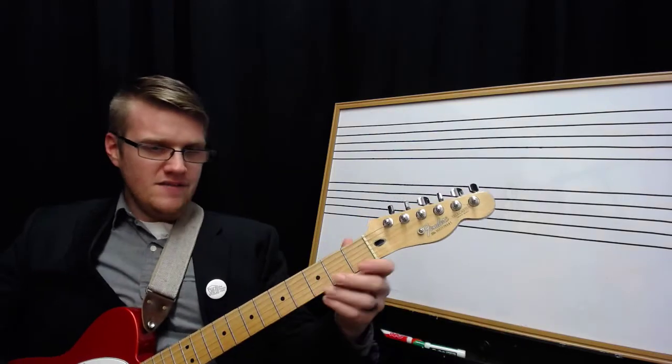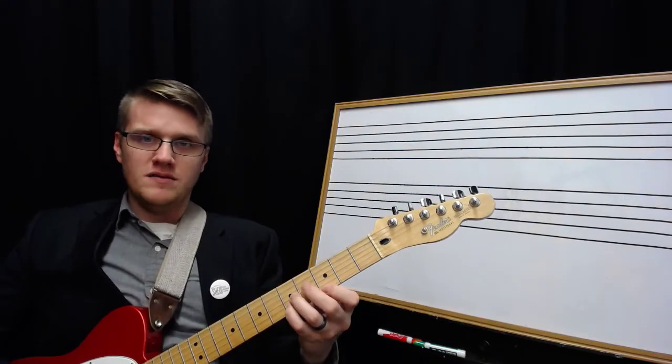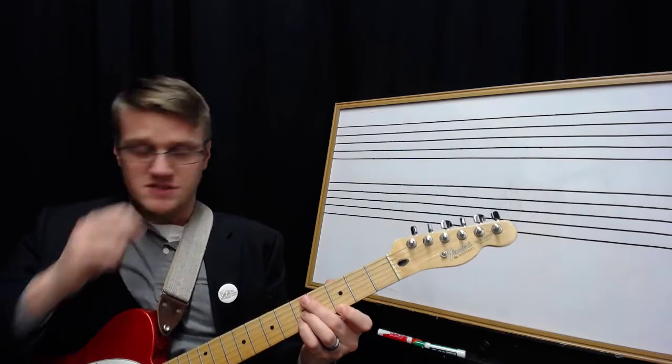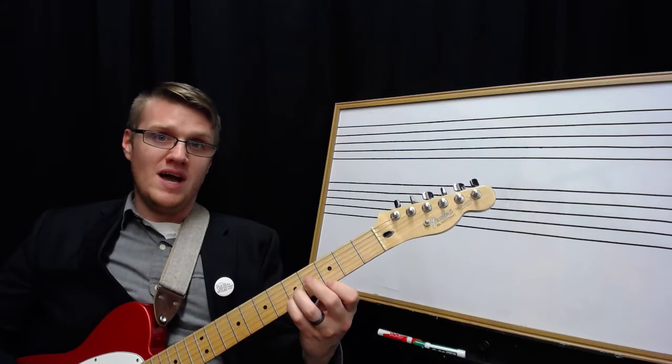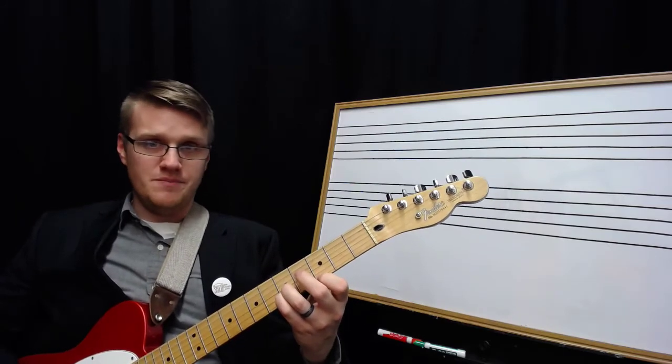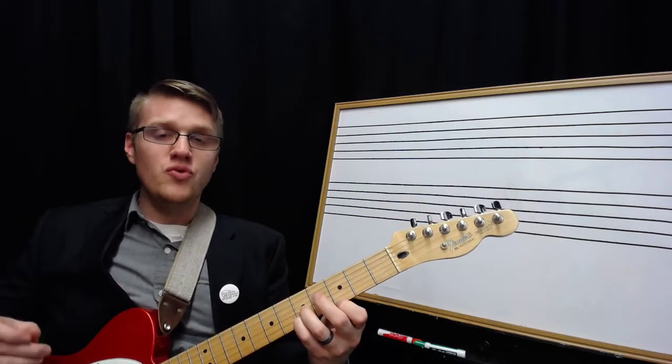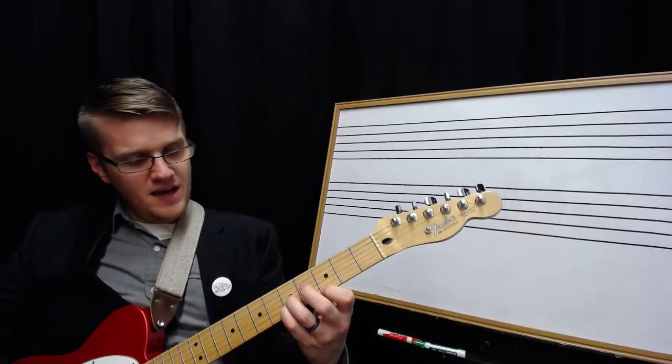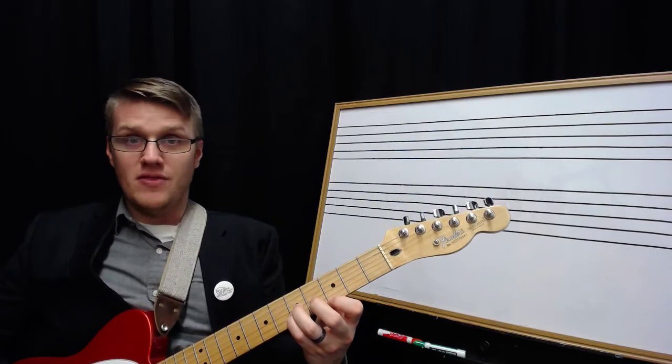So I have a few methods here that will help you with your triads, whether you're going to use them for comping or soloing. The first one I use is I like to play through the cycle of fourths on the same string set with the same inversion. So I'm going to start on C with a root position triad on string set one, two, three. So here's C. I'm thinking about the root of the chord as my target note. I know the shape, and I'm thinking about where the root is on the third string.